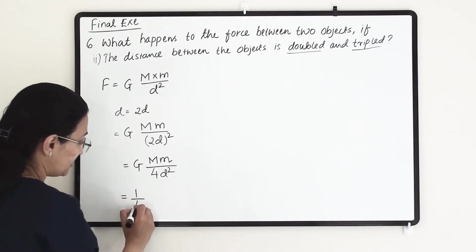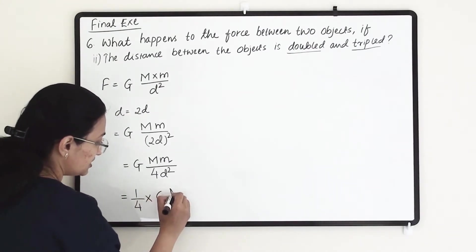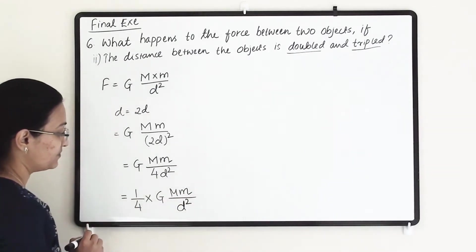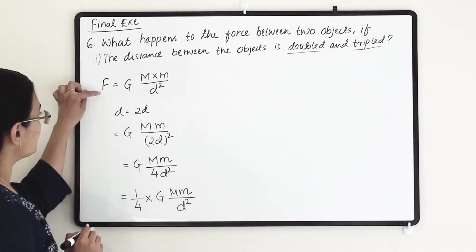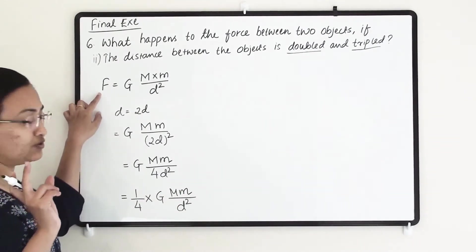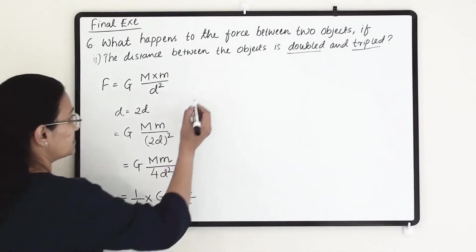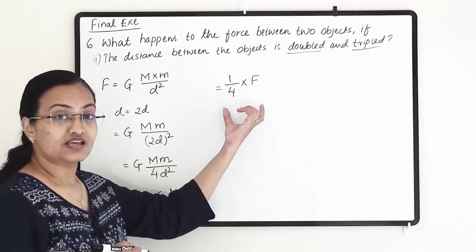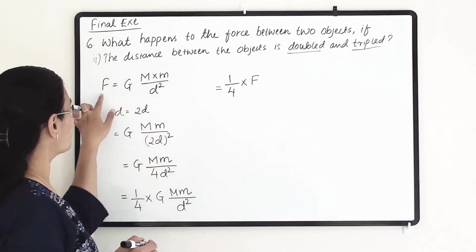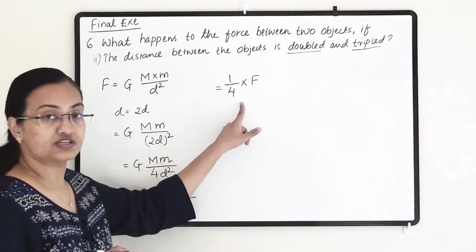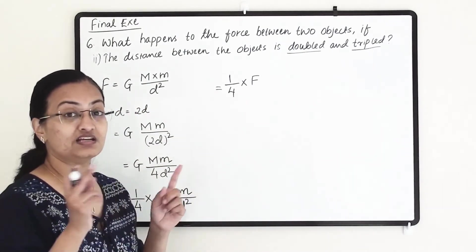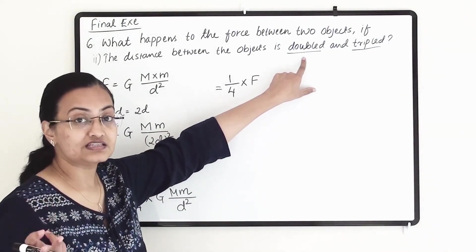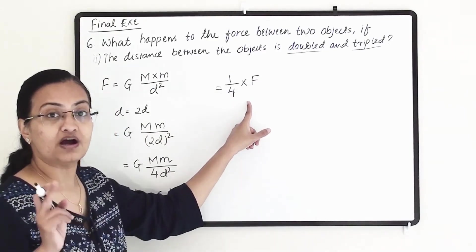Taking the 4 out, we get one-fourth times G times capital M times small m divided by d square. This expression represents the original force F, so we can write one-fourth times F. The force has become one-fourth. When we double the distance, our force is reduced to one-fourth.